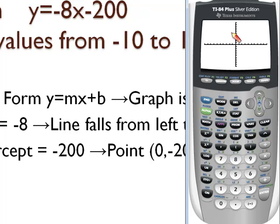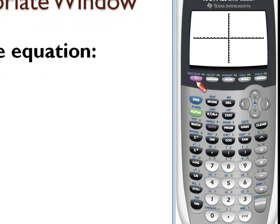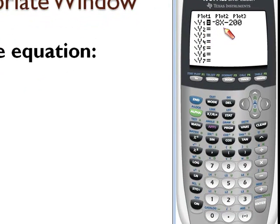So let's use the table feature of our calculator to find a good range just as we did in the graphing part 1 video. So the first step is going to be to make sure our equation is actually in the y equals area. So I press y equals. There's my equation. Remember a table cannot be generated if there's no data in here.